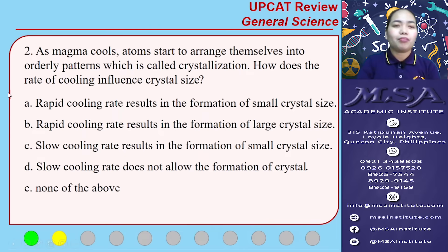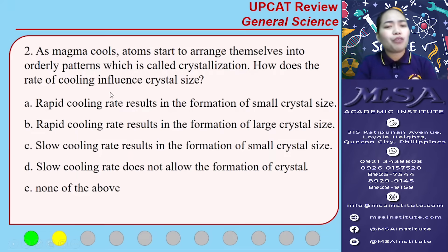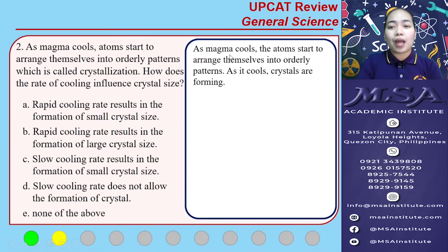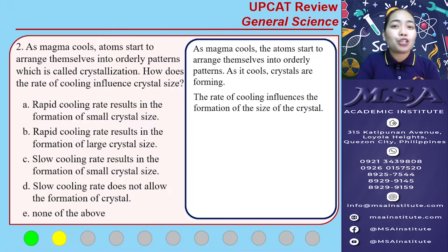Number two: as magma cools, atoms start to arrange themselves into orderly patterns, which is called crystallization. So how does the rate of cooling influence crystal size? As magma cools, crystals are forming, and the rate of cooling influences the size of the crystals. We can use the process of elimination on our choices — let's take a look at letters B and C.